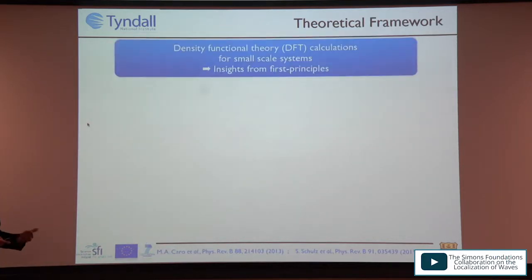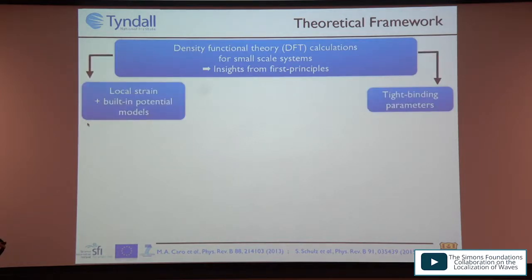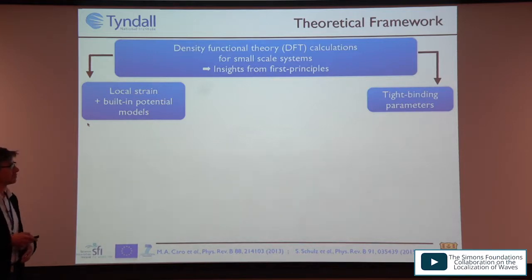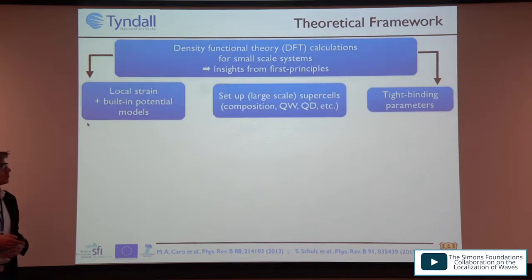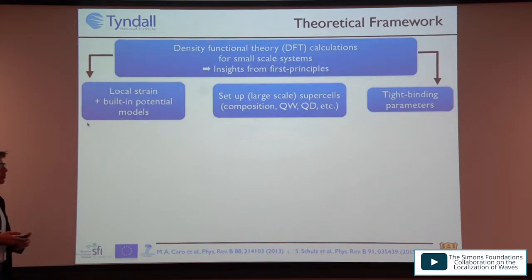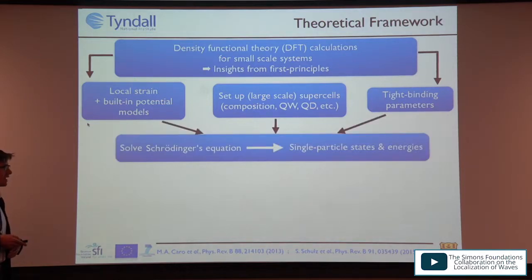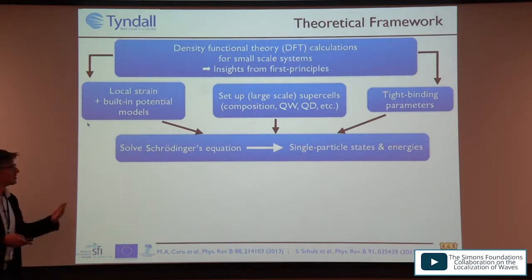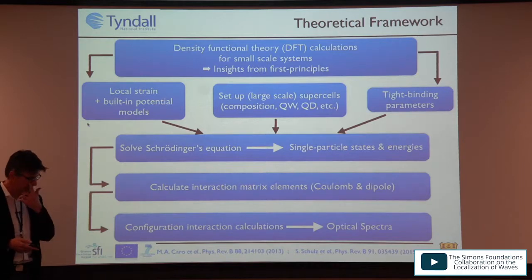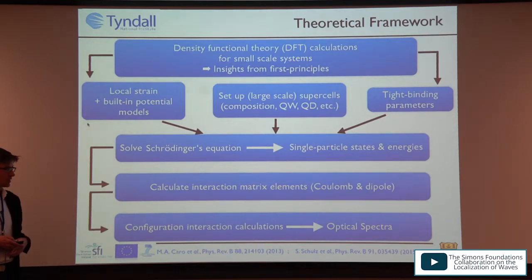Starting from density functional theory for small-scale insight, we developed local strain VFF models, a built-in potential theory that accounts for alloy fluctuations and polarization effects, and tight binding parameterizations. We set up large-scale supercells with random alloy fluctuations, composition clustering, quantum wells or quantum dots, and feed these into Schrödinger's equation to calculate single-particle states and energies. For excitonic effects we calculate Coulomb matrix elements and dipole matrix elements, using CI calculations combined with Fermi's golden rule to obtain optical spectra.